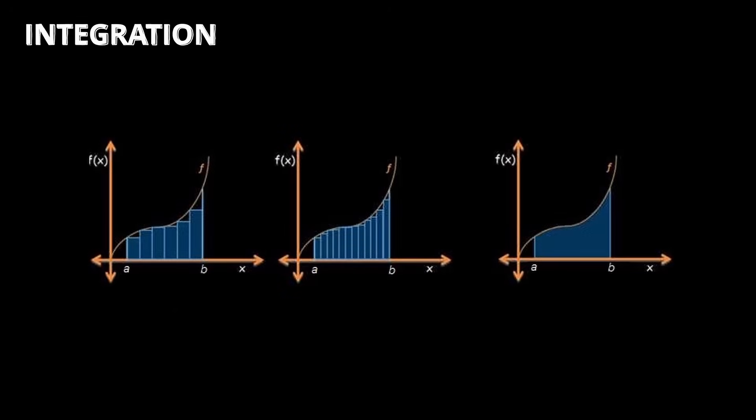Here, we see that you can slice up the area under this curve into six rectangles. This gives you a rough but inaccurate area. You can increase the slices to 12, which becomes slightly more accurate yet still not 100% correct. Finally, you can increase the slices to an infinite number to get the exact area under the curve, which is exactly what the essence of integration is.